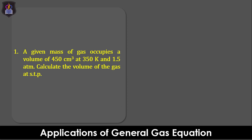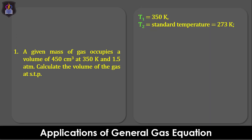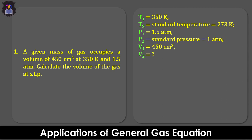Let's now see how to apply the general gas equation. Question 1: A given mass of gas occupies a volume of 450 cm³ at 350 Kelvin and 1.5 atm. Calculate the volume of the gas at STP. From the question, the initial temperature T1 is 350 Kelvin, the final temperature T2 is the standard temperature 273 Kelvin, the initial pressure P1 is 1.5 atm, and the final pressure P2 is the standard pressure 1 atm. The initial volume V1 is 450 cm³ and we have to calculate the final volume V2.